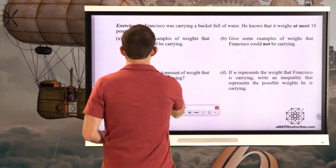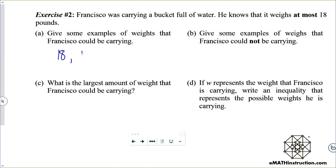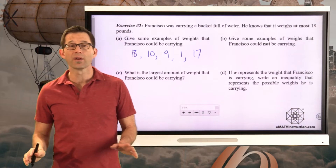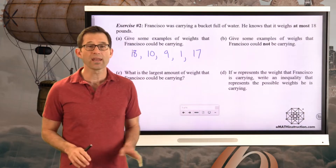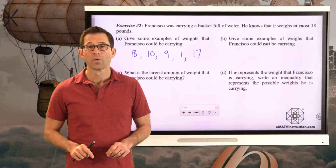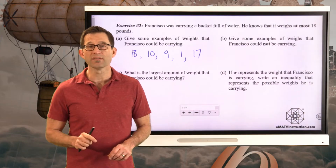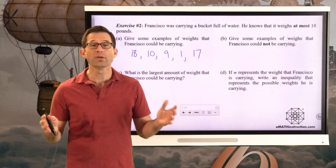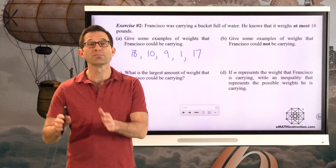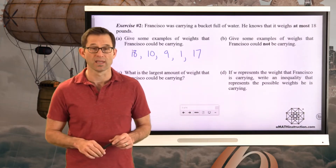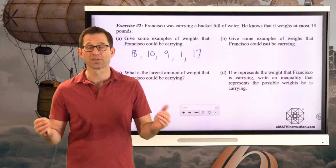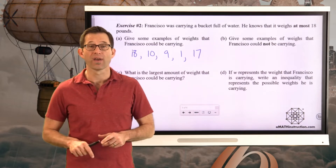He could be carrying 18 pounds, 10 pounds, 9 pounds, 1 pound, 17 pounds — there's actually an infinite number of choices. You just can't have anything bigger than 18. If I say the bucket weighs at most 18 pounds, then it couldn't have been 20 because 20 is more than 18. 'At most' means that's the most you could have — 18.